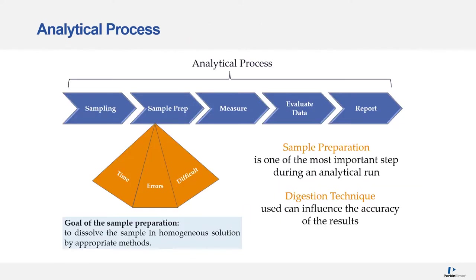The analytical process follows five main steps: sampling, which in this case is mining something like ore, rock, or coal; sample preparation, which involves crushing the samples, making them homogeneous, and digesting the samples to get them into liquid form for analysis; followed by the measurement stage in which you decide what instrument to run and what elements to analyze for. After this you can evaluate your data and then report your findings.